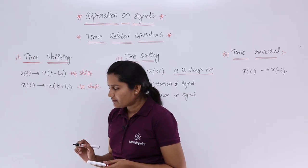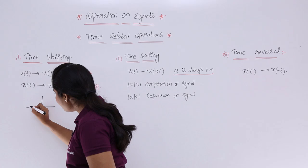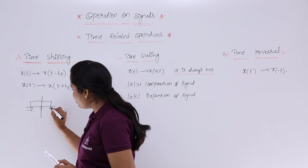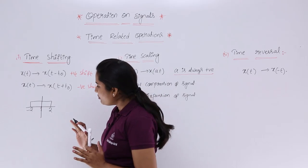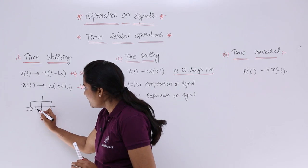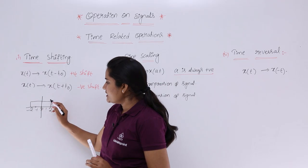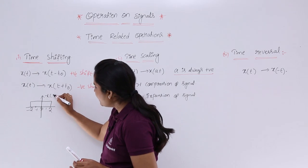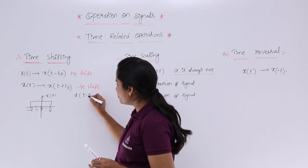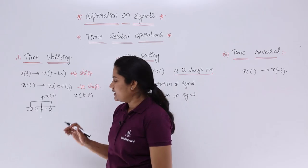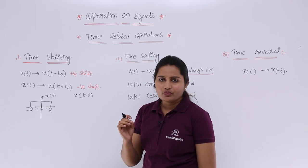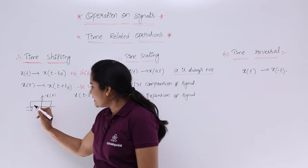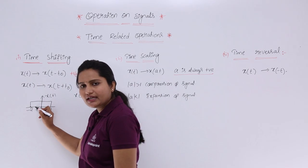For a diagrammatic representation of shifting — if you are having a rectangular signal with time period from minus 2 to 2, it covers minus 2, minus 1, 0, 1, 2 — that is 4 units total. Now if this is x(t) and you want to draw x(t minus 2), it tells you to shift the signal by 2 positions in the positive direction, meaning you shift to the right by 2 places.